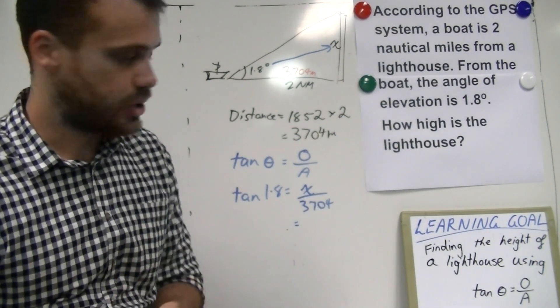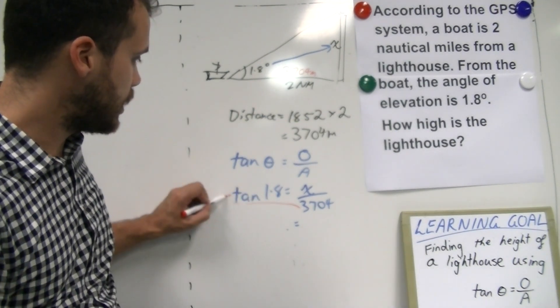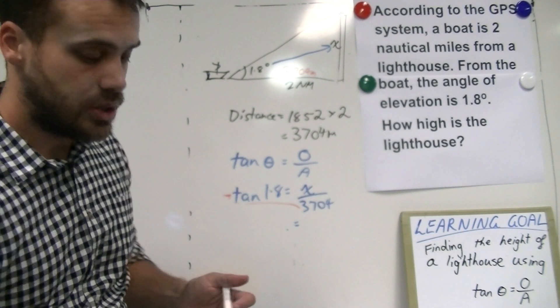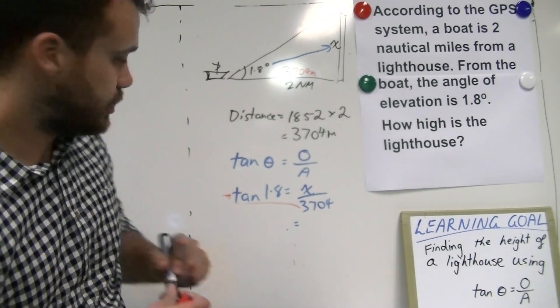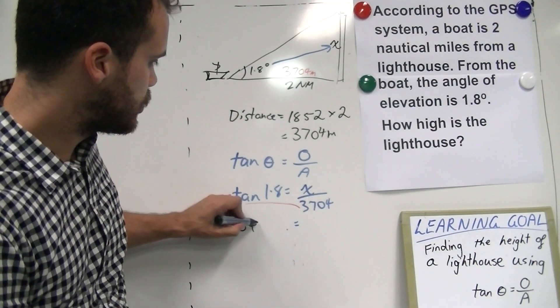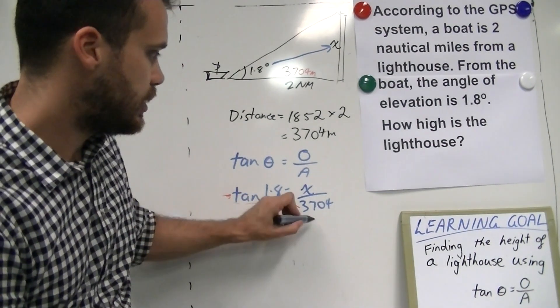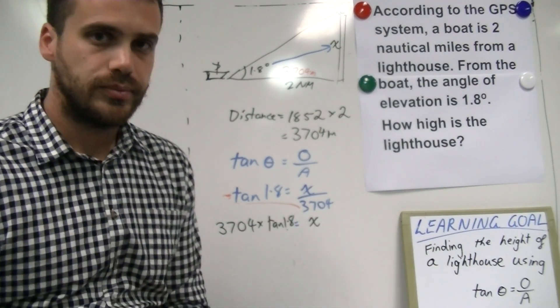When you get into this situation, you need to take that 3,704 and move it to the front here. So, you're going to end up with 3,704 times tan 1.8 and that's equal to x.